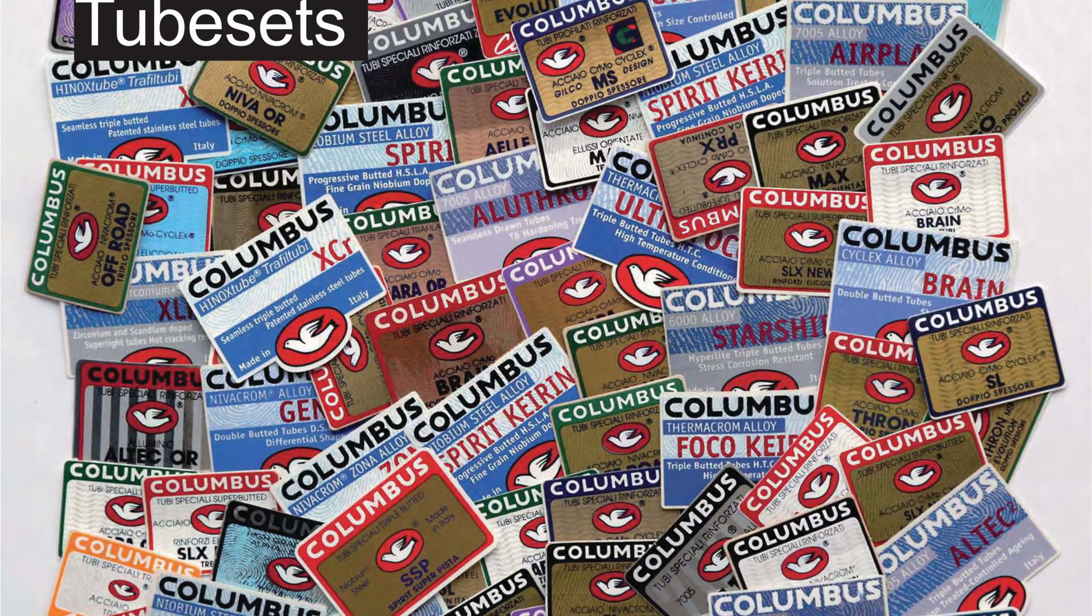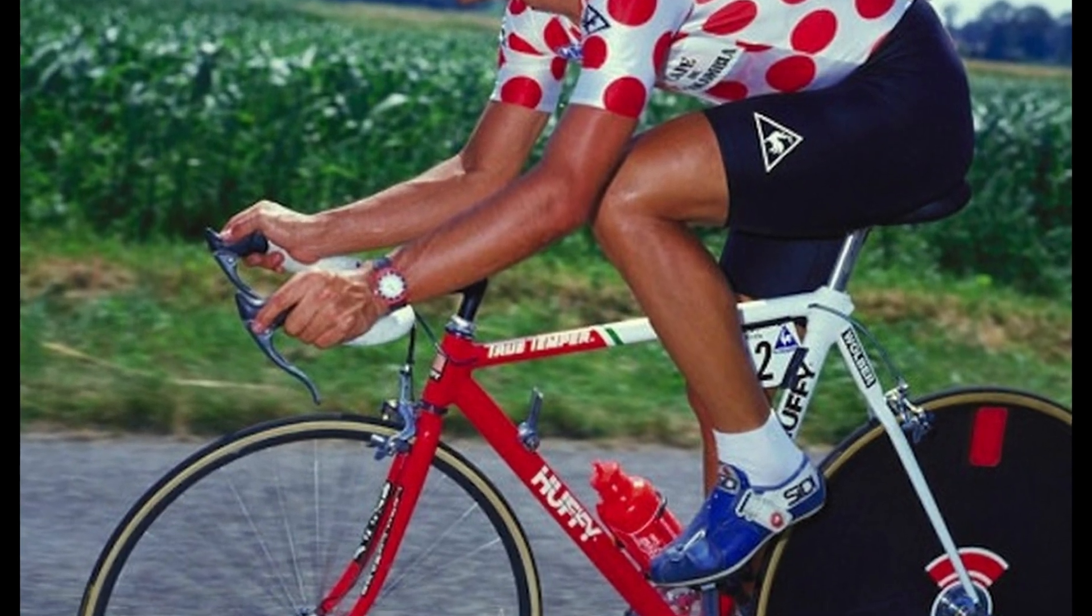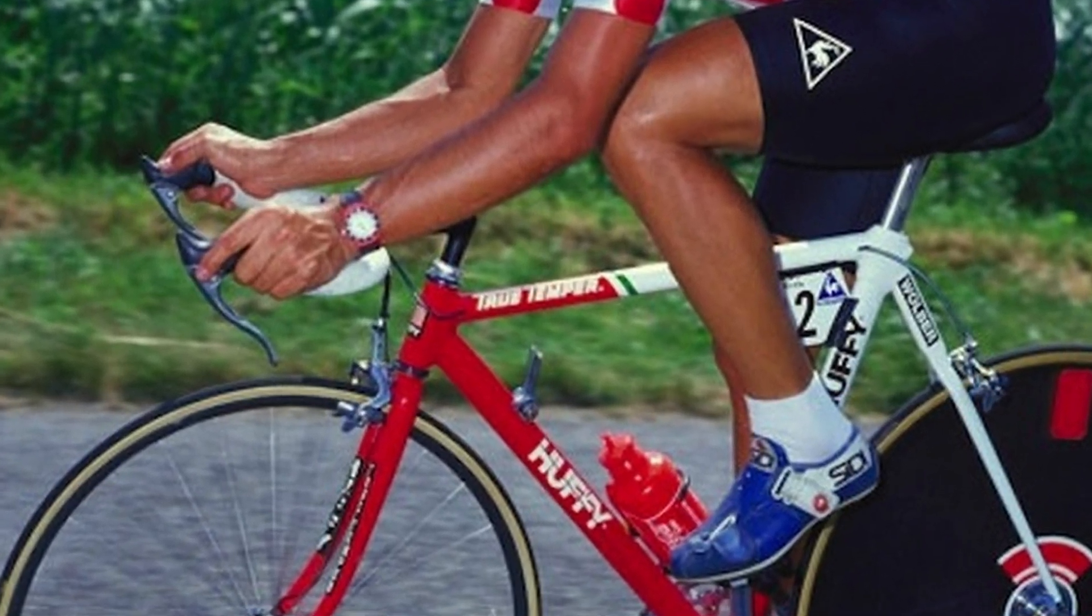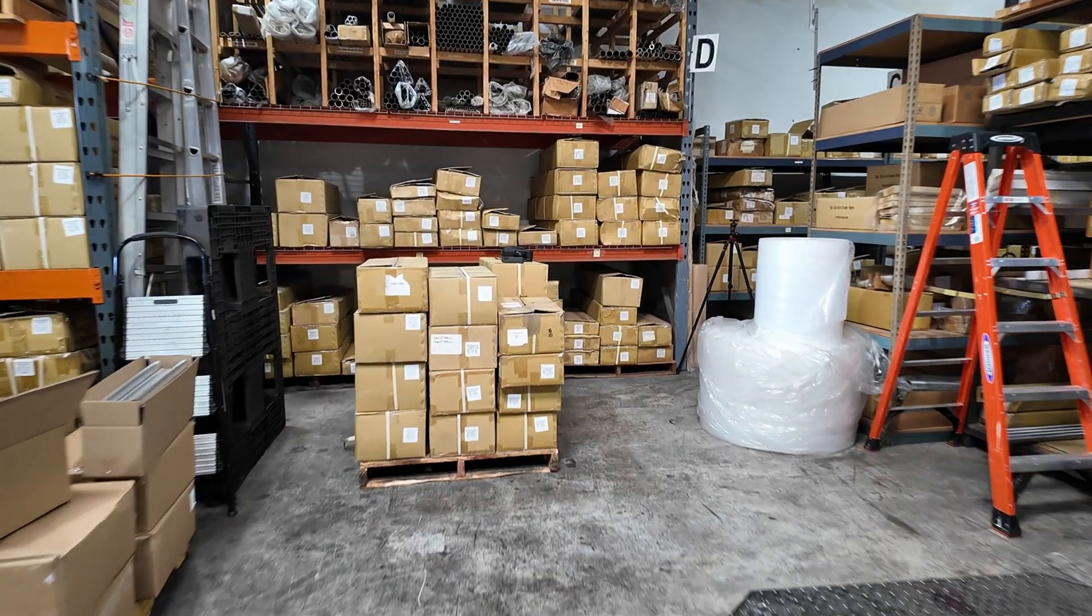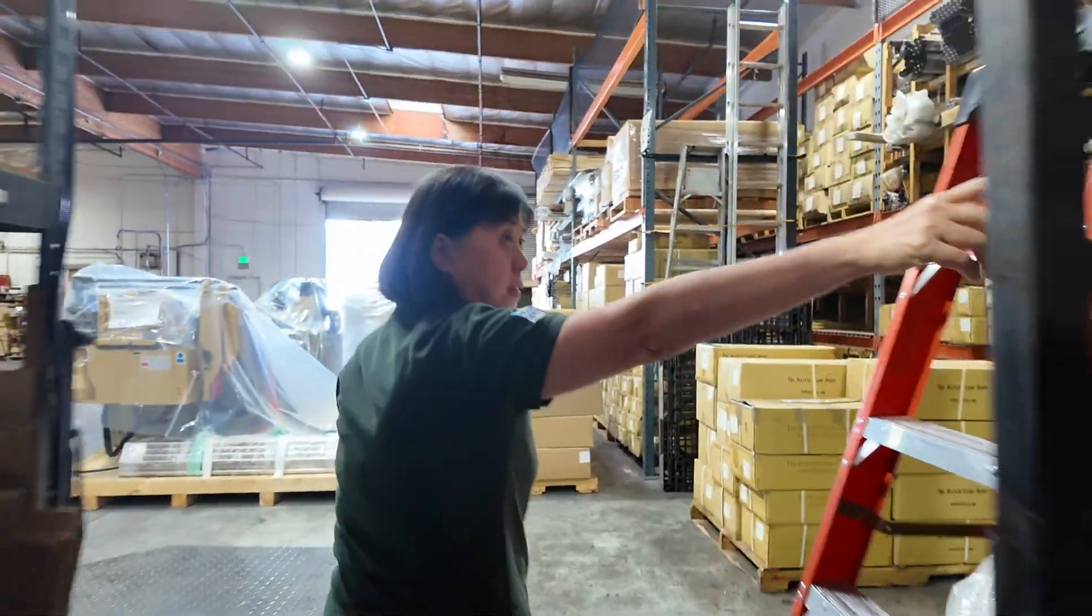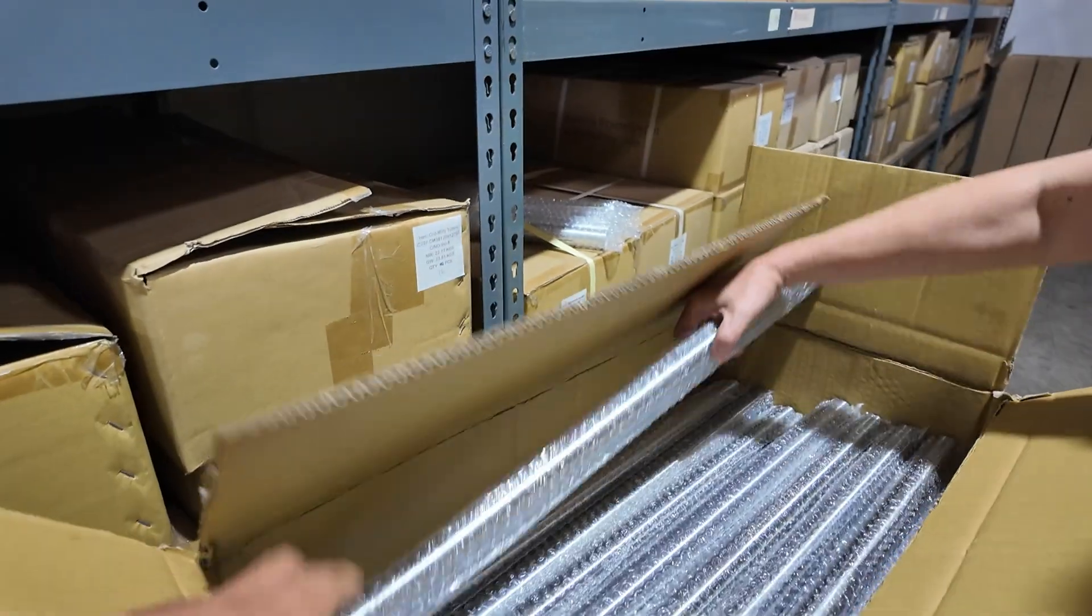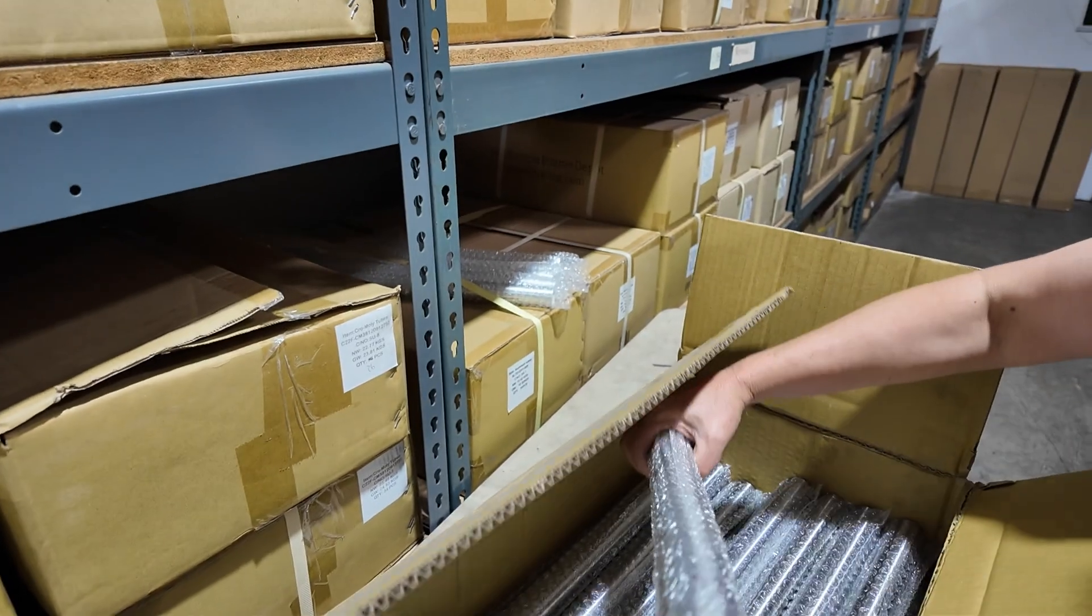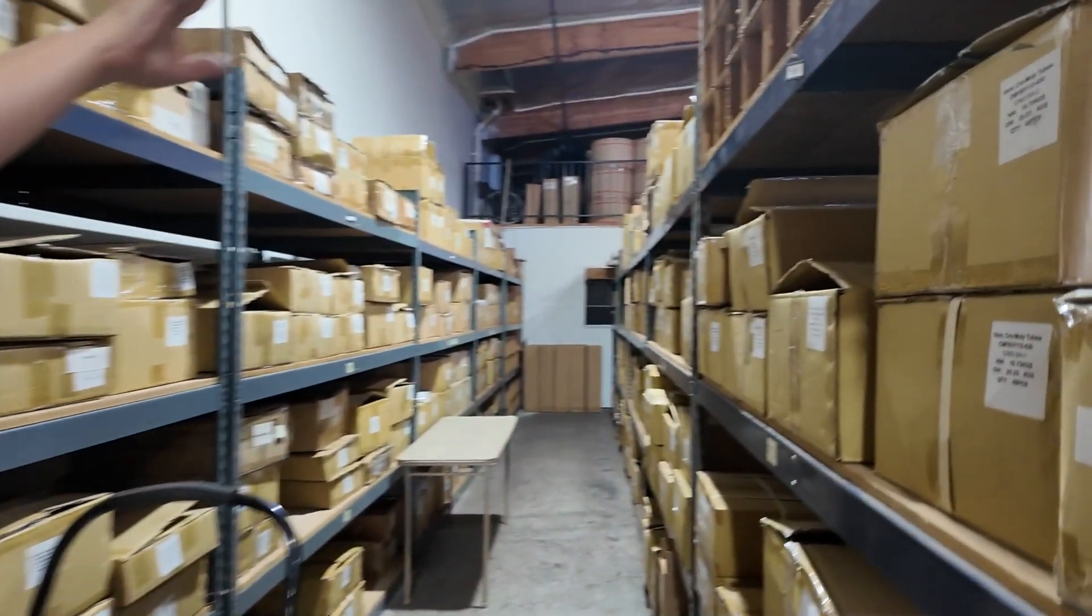Italians have Columbus, the British have Reynolds, and the Americans had True Temper until 2016, when they stopped producing tubes due to the shrinking market of steel bikes. To fill this gap and support the American frame builder, Fering began sourcing the American raw material and draws them into tubes in Taiwan. These tubes are called Velospec. Rita is one of the owners of Fering and Velospec. Here's a quick chat.